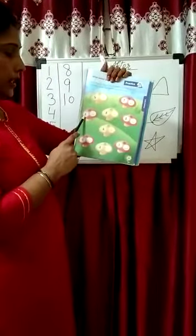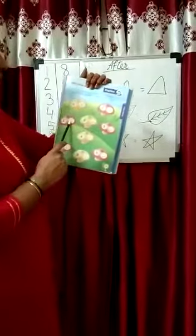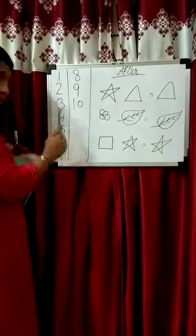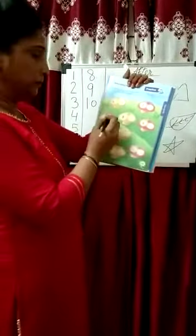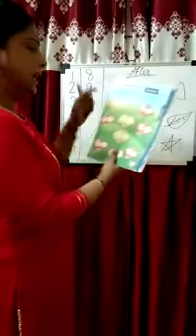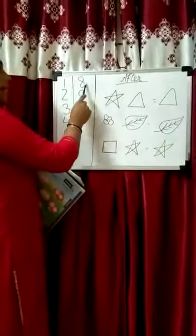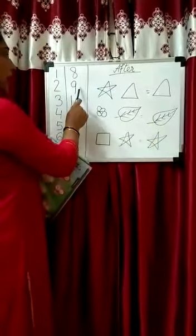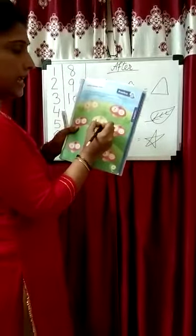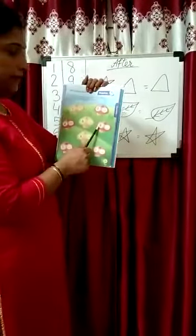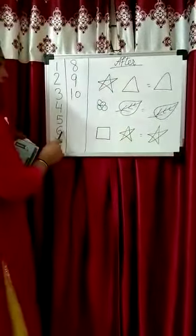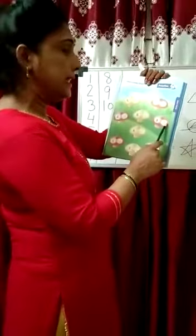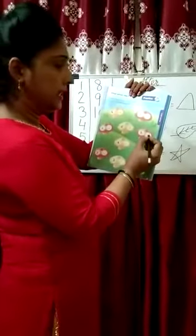Now here is 2 — 3 is after 2, so the answer is 3. Next is 8 — 9 is after 8, so the answer is 9. Next is 5 — 6 is after 5, so the answer is 6.